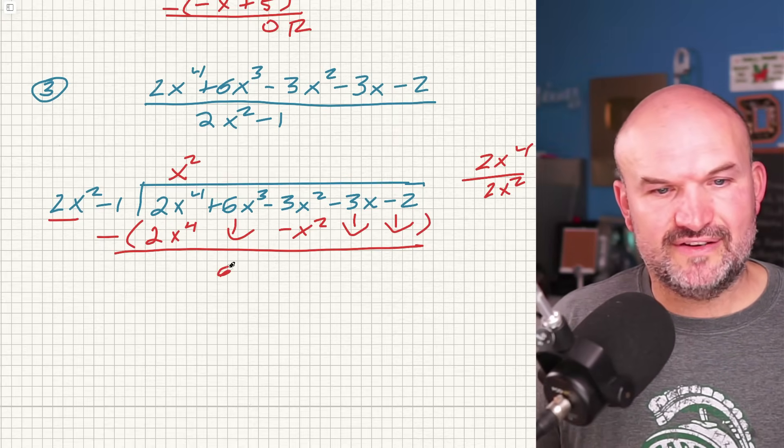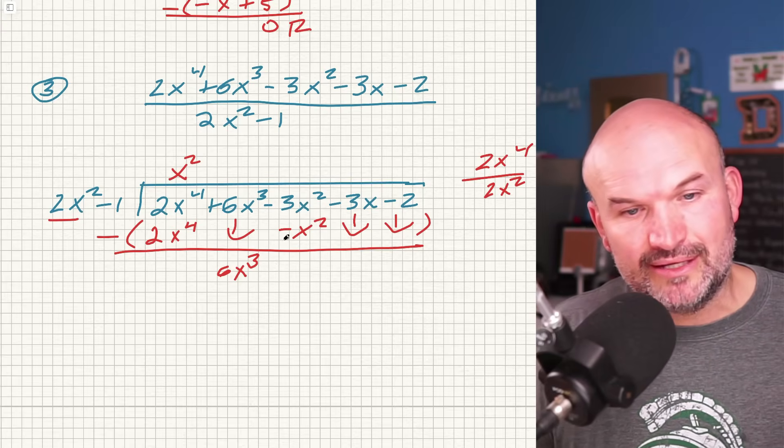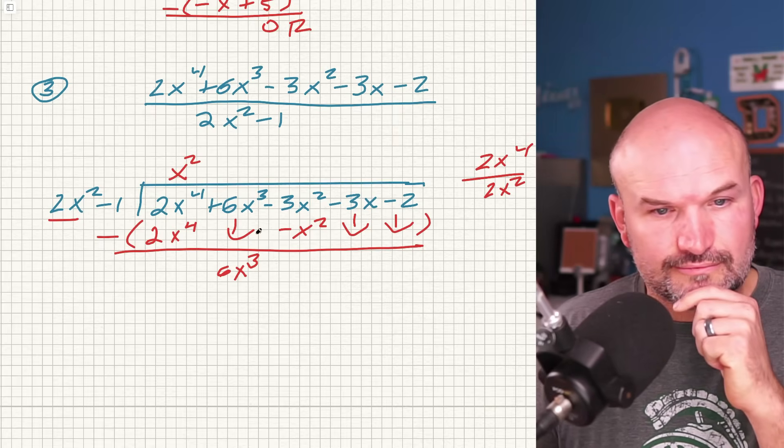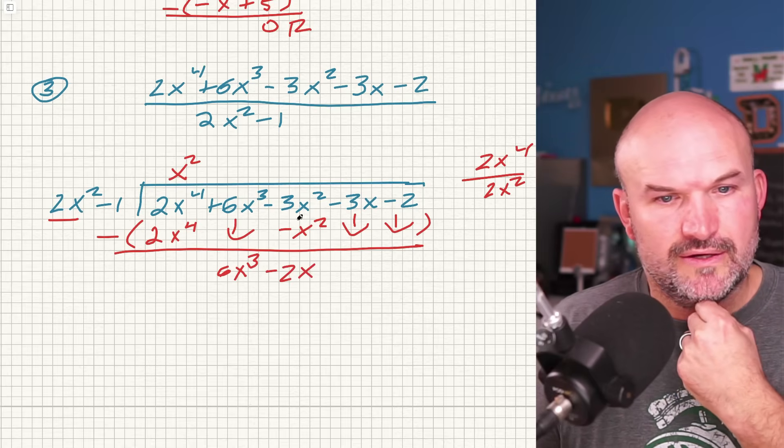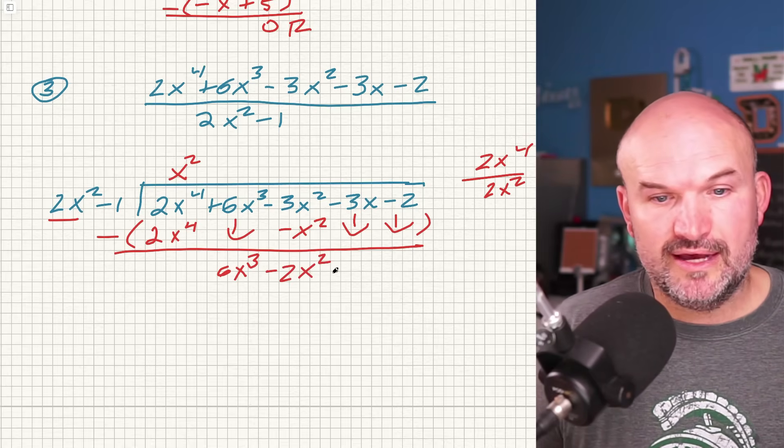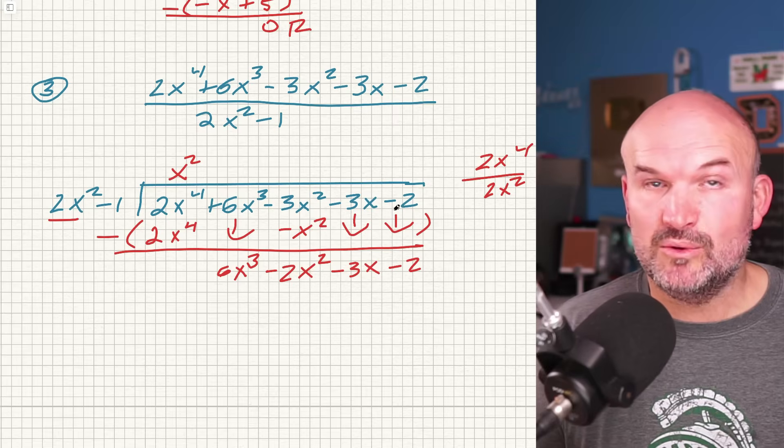That's going to go to zero, so we're good here. So I have 6x cubed minus 3x squared. Again, these negatives, they get everybody. That's a double negative, so it's a positive. So it's negative 2x squared, right? Because 3x squared and then plus x squared is negative 2x squared. And then we have minus 3x and minus 2. That's round number one.